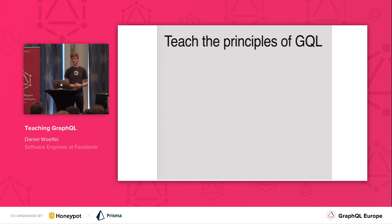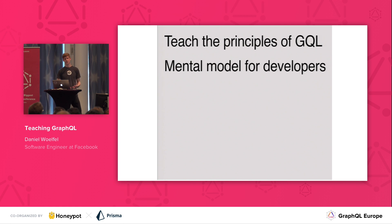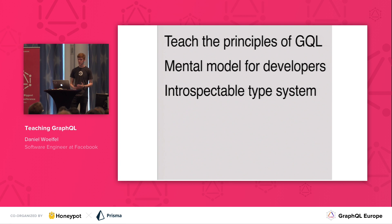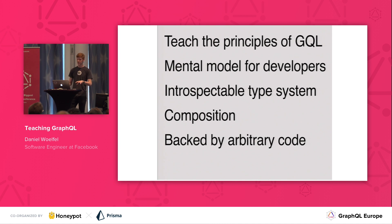It's also important to teach the principles of GraphQL itself. The first is that GraphQL is a mental model for developers — that explains why the query looks like JSON, why fragments exist, why the server is supposed to serve the needs of the client. Another is that it has an introspectable type system, which explains why the tooling is so great and why your code can be concise without null checks everywhere. Then composition, which we covered in detail. And it's backed by arbitrary code — important for server-side work where people don't really understand where GraphQL fits. And finally, mutations.